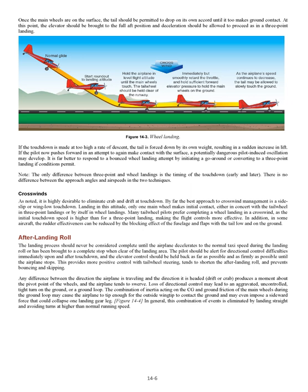After Landing Roll: the landing process should never be considered complete until the airplane decelerates to normal taxi speed during the landing roll or has been brought to a complete stop when clear of the landing area. The pilot should be alert for directional control difficulties immediately upon and after touchdown, and the elevator control should be held back as far as possible and as firmly as possible until the airplane stops. This provides more positive control with tailwheel steering, tends to shorten the after-landing roll, and prevents bouncing and skipping. Any difference between the direction the airplane is traveling and the direction it is headed — drift or crab — produces a moment about the pivot point of the wheels, and the airplane tends to swerve. Loss of directional control may lead to an aggravated, uncontrolled tight turn on the ground, or a ground loop. The combination of inertia acting on the CG and ground friction of the main wheels during the ground loop may cause the airplane to tip enough for the outside wingtip to contact the ground and may even impose a sideward force that could collapse one landing gear leg.